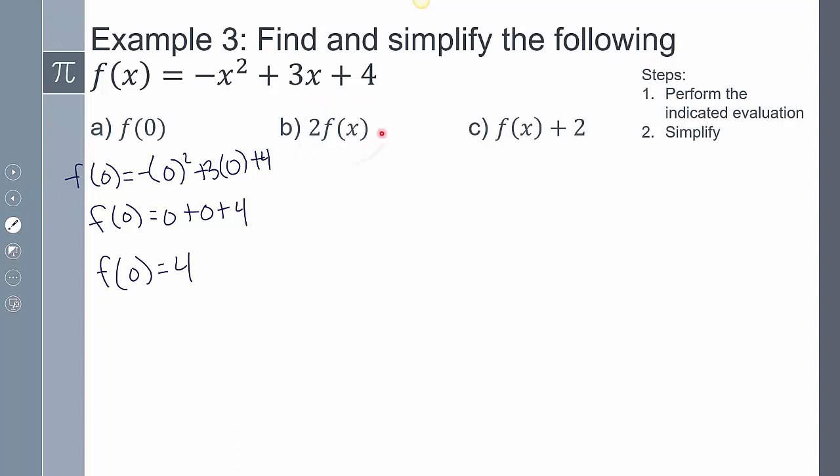Now this one might seem kind of weird. This is saying take 2 and multiply it by my entire function. And so 2 times my entire function, which is this statement, which is what we have here. So 2 times my entire function. And then so now distributing that 2 through, you're going to get negative 2x squared plus 6x plus 8.